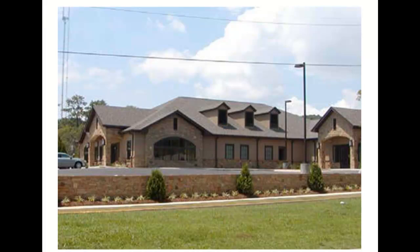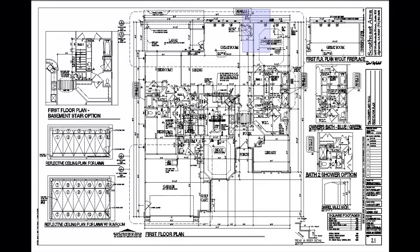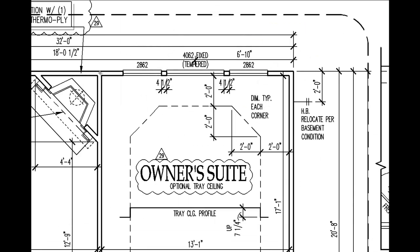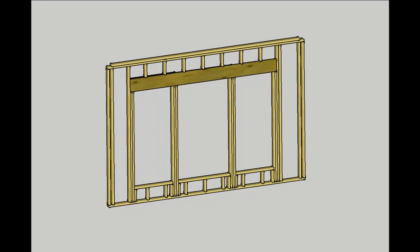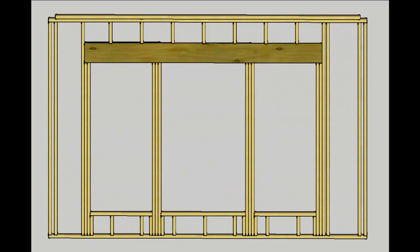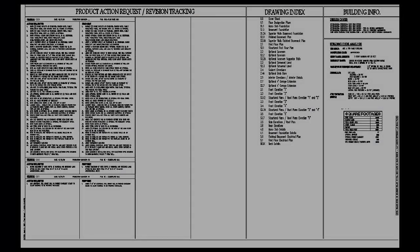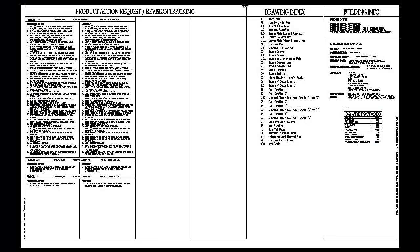To demonstrate how this works, we're going to go through the process that a framing carpenter would use to pull information from this set of plans and frame this section of wall, ultimately when completed looking like the example you see here. In order to complete this, we'll need information provided from both the architectural and the structural drawings.